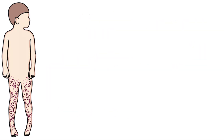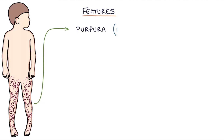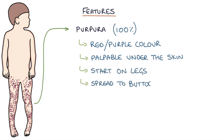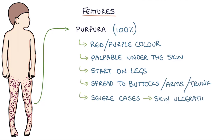Purpura are seen in practically 100% of patients with HSP. They are red-purple in colour and palpable under the skin. They typically start on the legs and spread upwards to the buttocks, and can also affect the arms and trunk. In severe cases, skin ulceration and necrosis can develop.